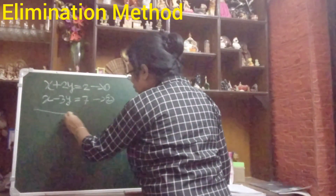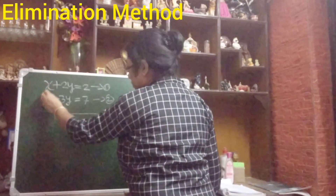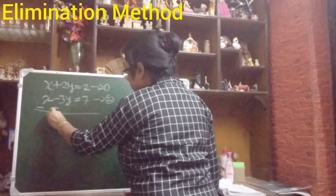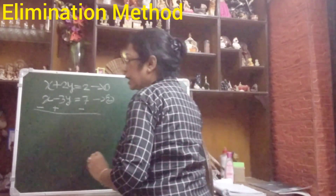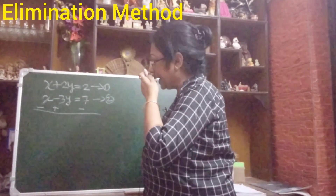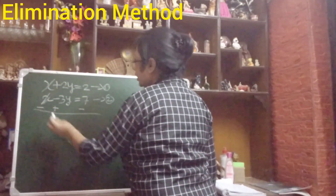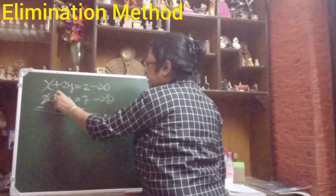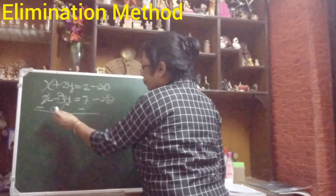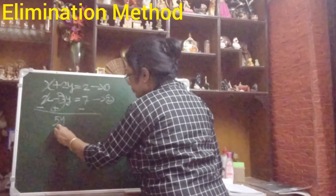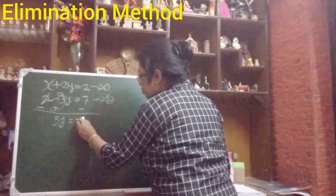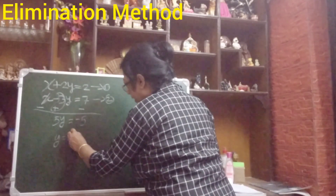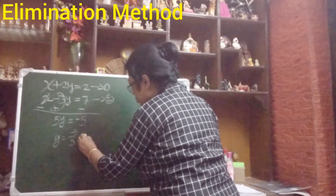For that, we will do subtraction. Here it is plus x and plus x — you change the sign, that is minus x. This is minus 3y, so you make it plus 3y, and plus 7 becomes minus 7. Now easily we can eliminate the variable x — plus x and minus x cancel out. Now, 2 plus 3 — that is 5y — equals to 2 minus 7, which equals to minus 5.